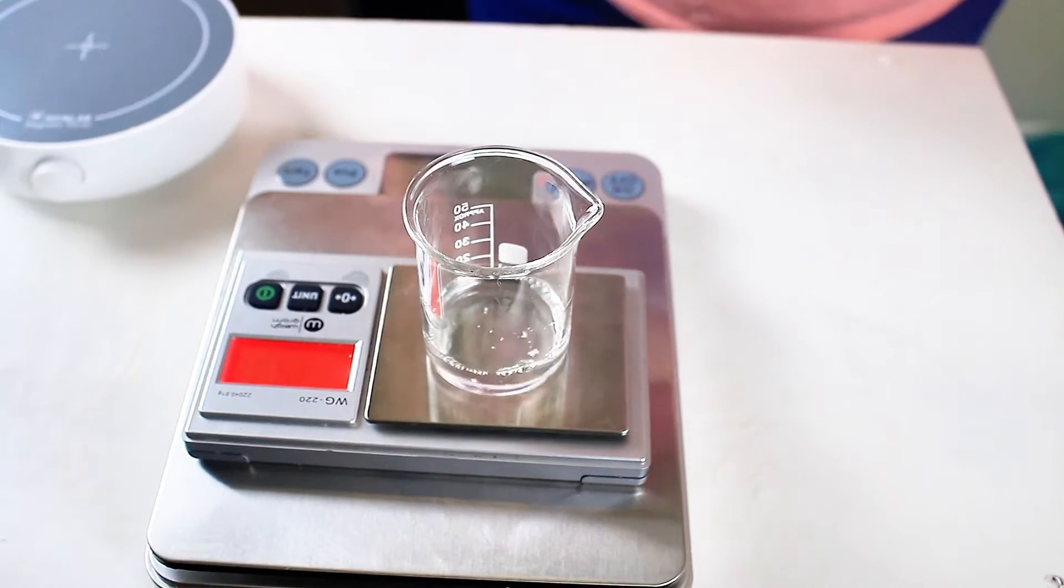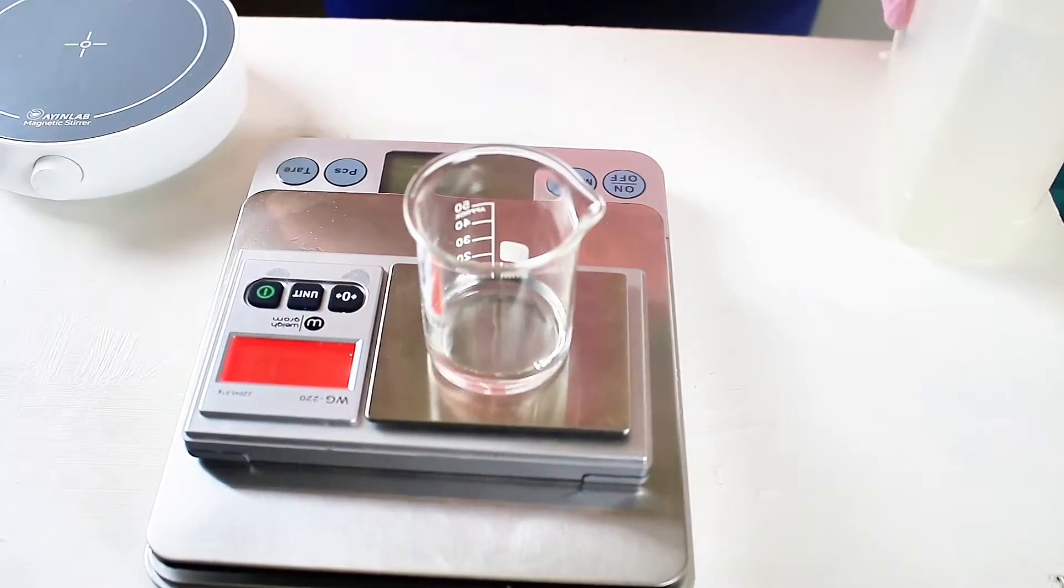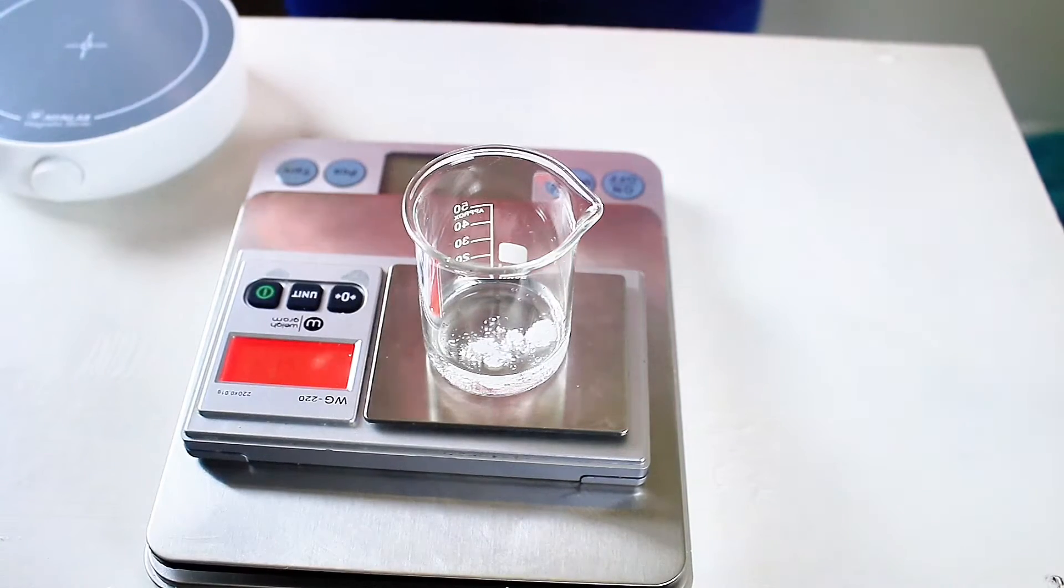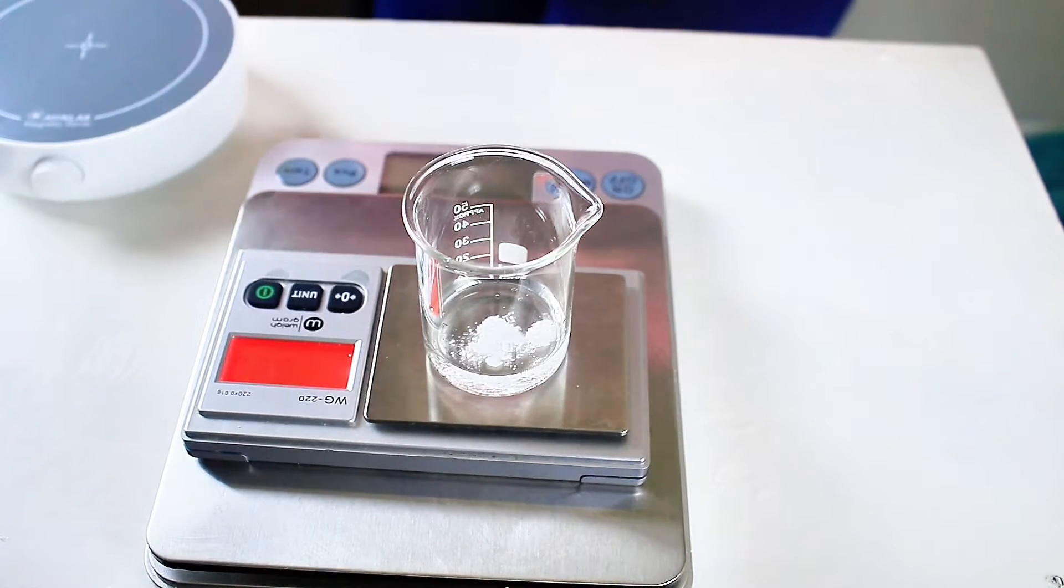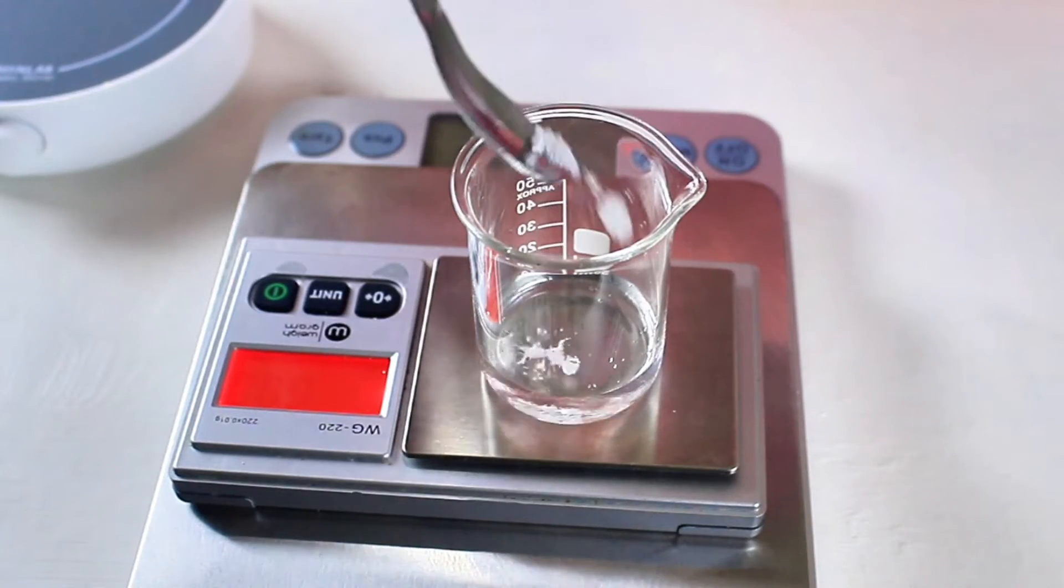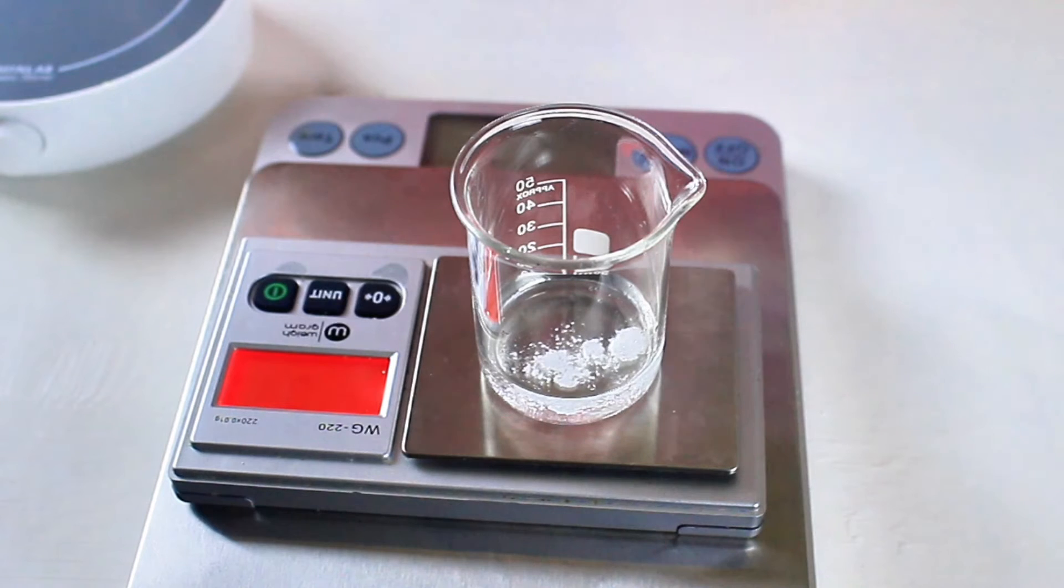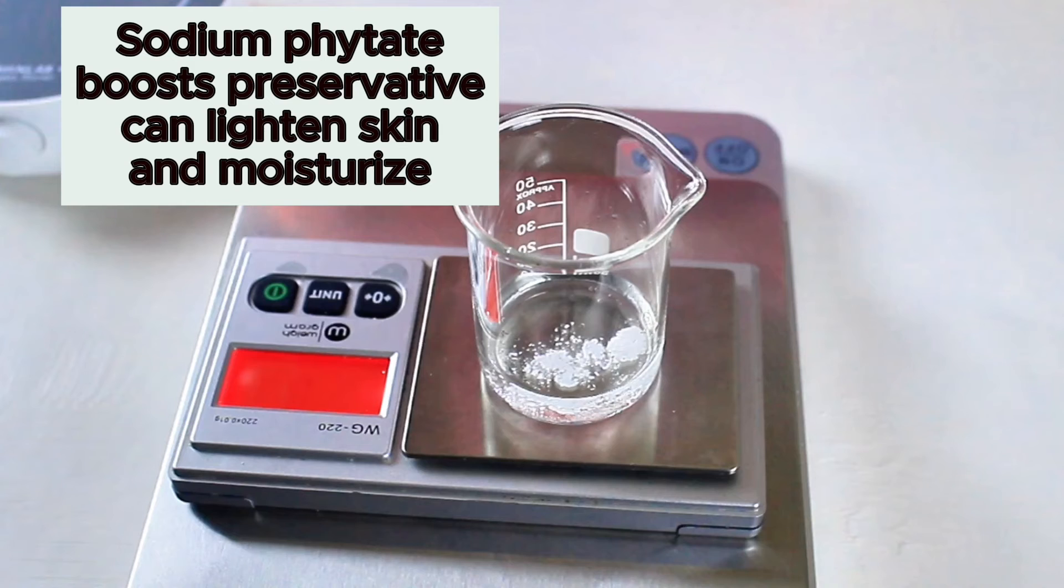I'm getting ready to measure out another ingredient that we need to use a respirator with. This ingredient, I promise you, if you don't have a respirator on, you are going to regret it. It is called sodium phytate. It is the chelator, which means that it binds trace metals like copper ions or iron. Lotioncrafter suggests using EDTA or sodium phytate when you're using Bakuchi oil to stop the discoloration.